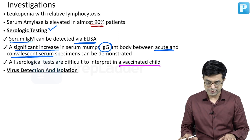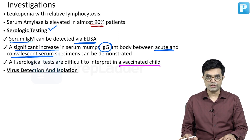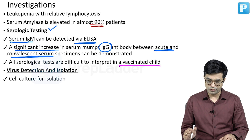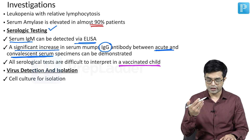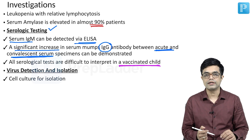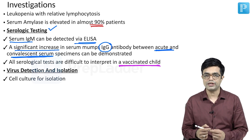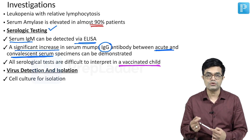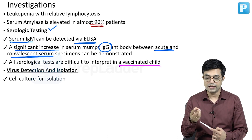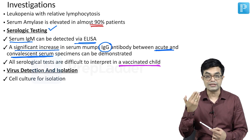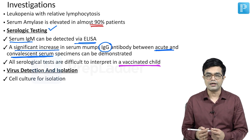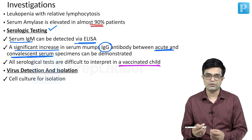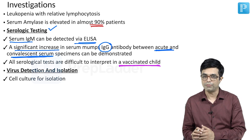We also have various virus detection and isolation methods. You can isolate the virus by using cell culture. Various specimens can be used — in an acute infected condition, you can use salivary secretions. You can use the CSF in patients with features of meningitis. You can also use other tissues, although other tissues are invasive to obtain.